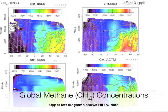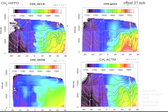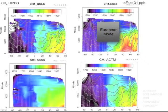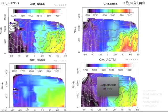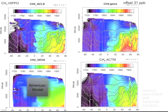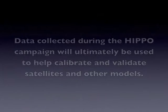This panel of figures shows the observations from HIPPO, which is shown in this panel, and three models: a European model over here, a Japanese model over here, and an American model over there.